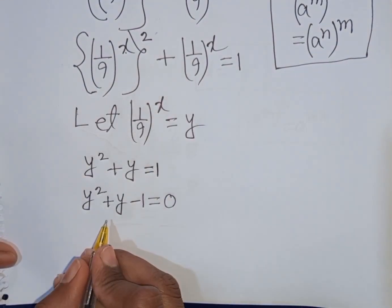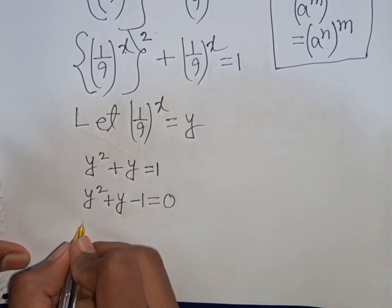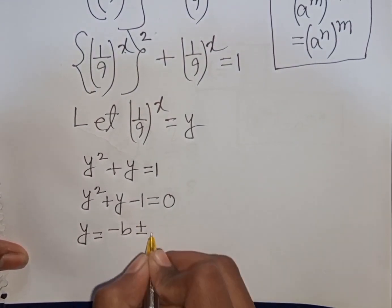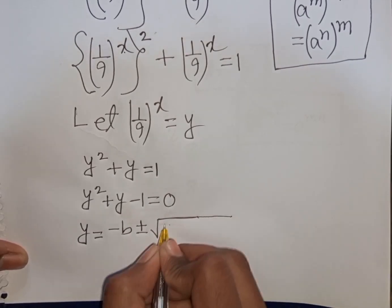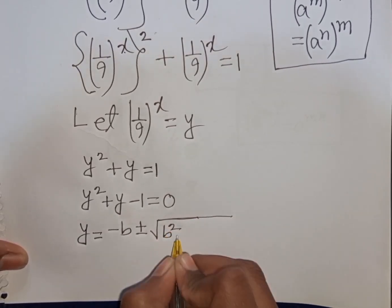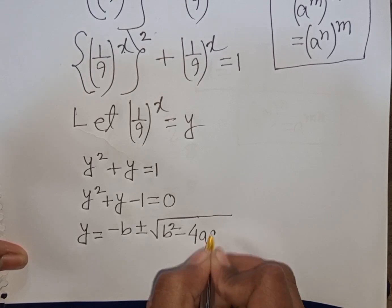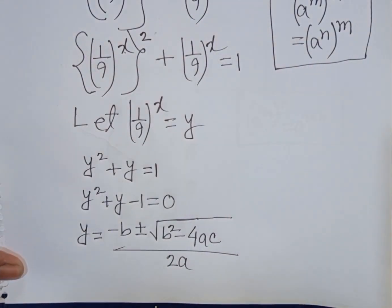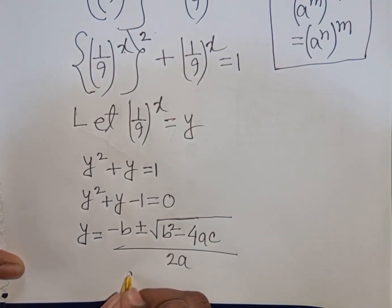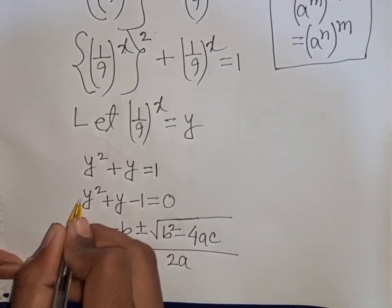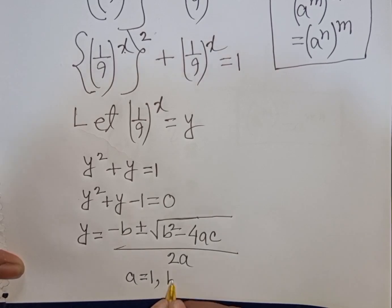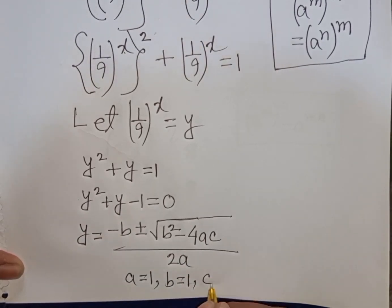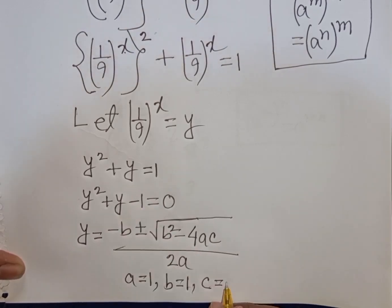Now we can apply the quadratic formula: y = (−b ± √(b² − 4ac)) / 2a. Here a = 1, b = 1, and c = −1.